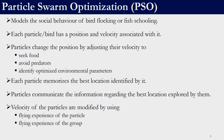Each particle or bird has a position and velocity associated with it. In real life these particles keep changing their position by adjusting their velocity, primarily to seek food, avoid predators, or identify optimized environmental parameters. A significant difference between TLBO and PSO is that each particle memorizes the best location identified by it — each particle keeps track of its own best location. The particle will memorize its best location and still keep exploring the search space. Particles communicate the information regarding the best location explored by them, and from all individual p_bests the global best can be located.